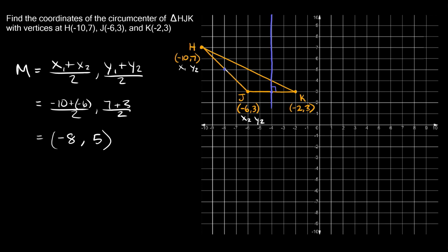Now let's find the perpendicular bisector for the midpoint of HJ. To do that, we first have to find the slope of line HJ. The slope between two points equals (y₂ − y₁)/(x₂ − x₁). Our points are already labeled — H is (x₁, y₁) and J is (x₂, y₂). So the slope equals y₂ minus y₁, which is (3 − 7), over x₂ minus x₁, which is (−6 − (−10)).